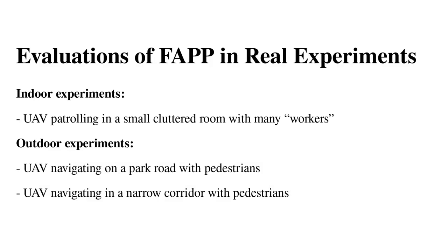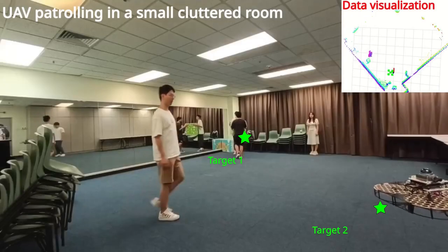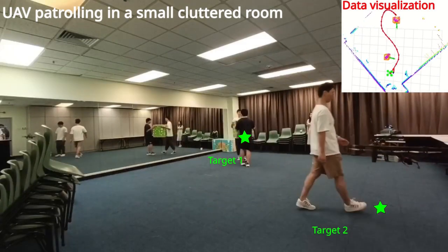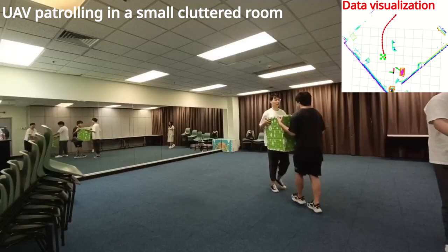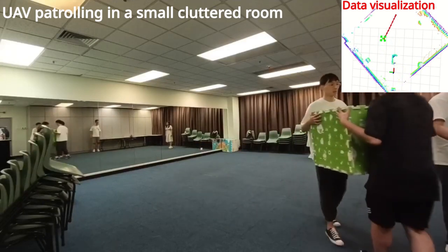Finally, we designed three types of real-world scenarios to test our entire system, FAPP, in dynamic cluttered environments. In the first scenario, there are many workers moving boxes in a small room. The UAV can patrol the room from one corner to another without any collisions.